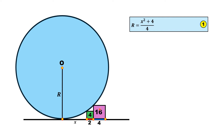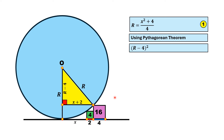Now we make another construction. We draw a radial line to the second tangency point, which is also equal to r, and draw a line parallel to the base that is perpendicular to this radial line. Since the horizontal distance from before is x and the side of the smaller square is 2, this whole horizontal length becomes x plus 2. Similarly, the vertical height is 4 from the larger square, so the remaining vertical length is r minus 4. This yellow shaded region is again a right triangle with legs r minus 4 and x plus 2, and hypotenuse r.